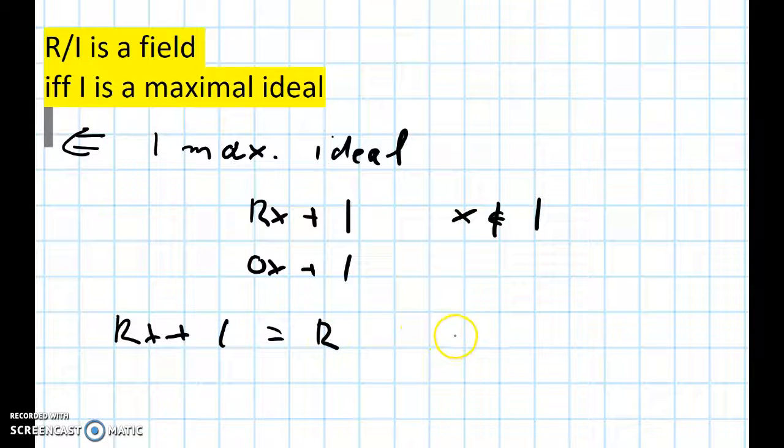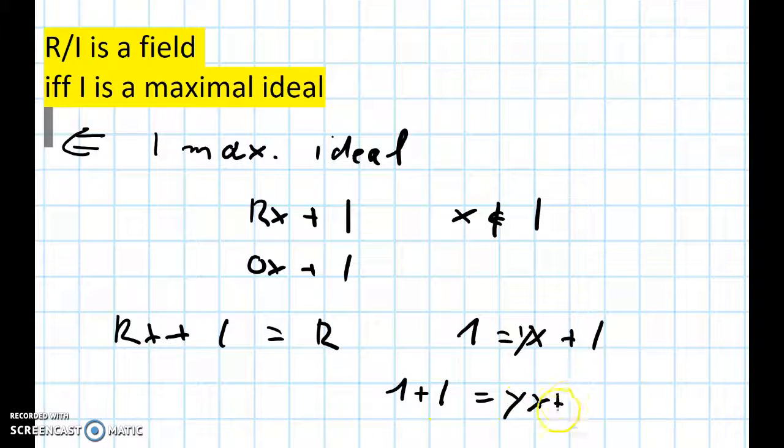This means that we can write 1 in the form y times x plus I, and now we are allowed to add I on both sides. So we have 1 plus I is yx plus I plus I, which is the same as yx plus I.